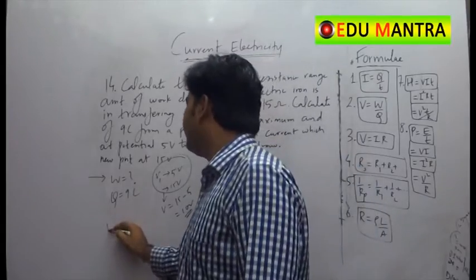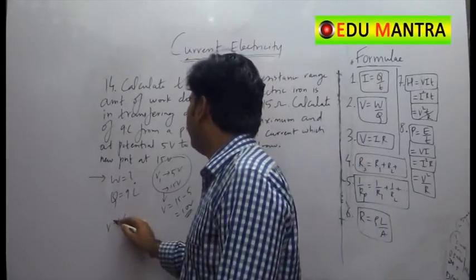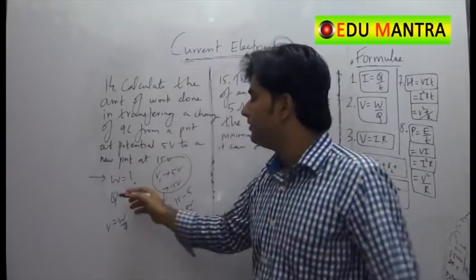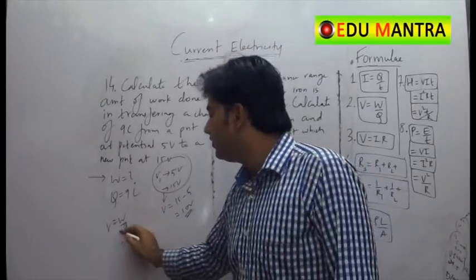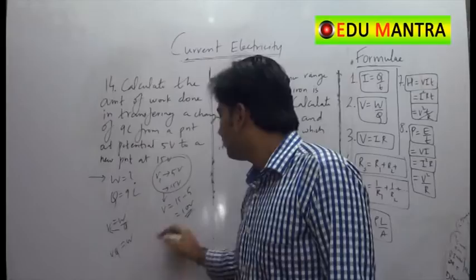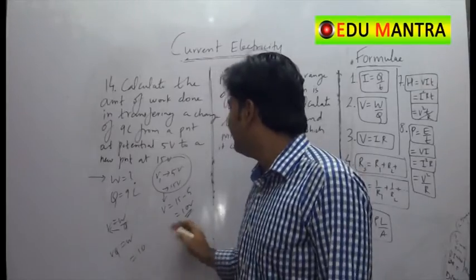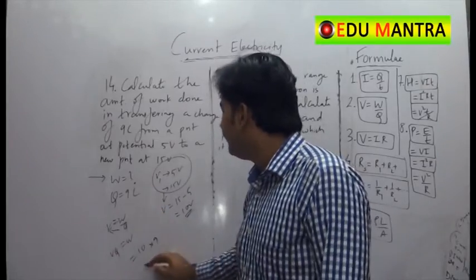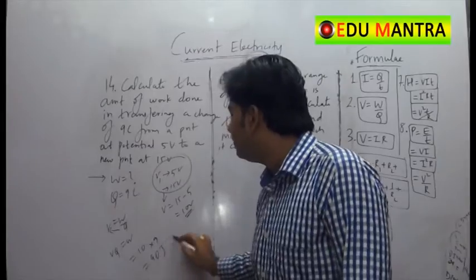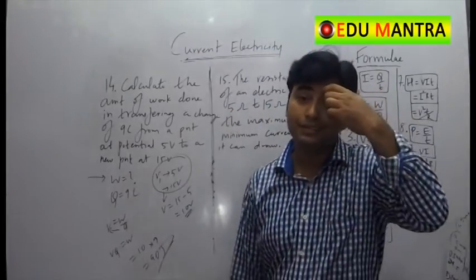So I can do it as V is equal to W by Q. We have the formula for potential difference. So what is work? W is equal to VQ. That is, what is V? We have obtained it as 10. What is Q? 9. So it is 90 joule. The amount of work done is 90 joule. Fine, the next one.